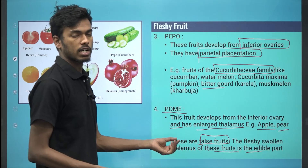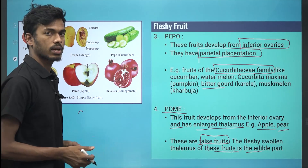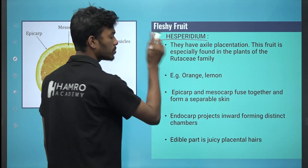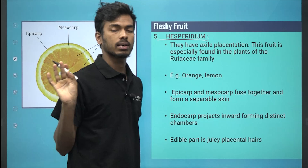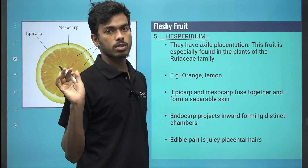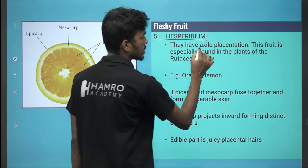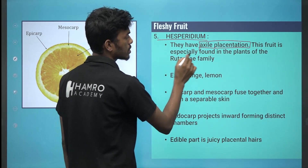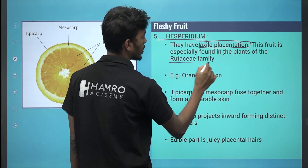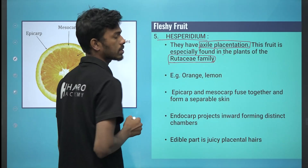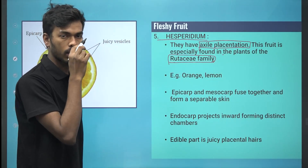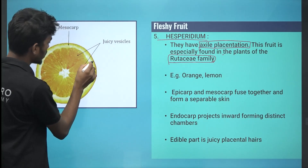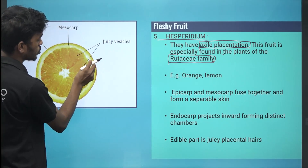What is the place of the thalamus? What is the hesperidium? You can understand that hesperidium refers to suntala and kagati — citrus fruits. It is axile placentation. This fruit is especially found in the Rutaceae family. The Rutaceae family includes orange and lemon.